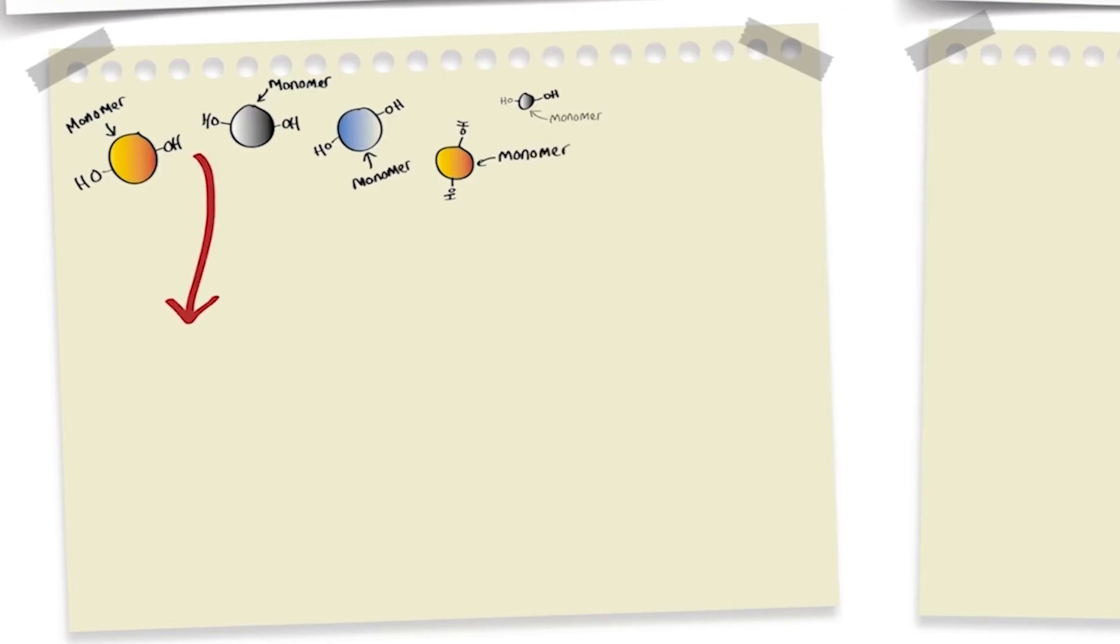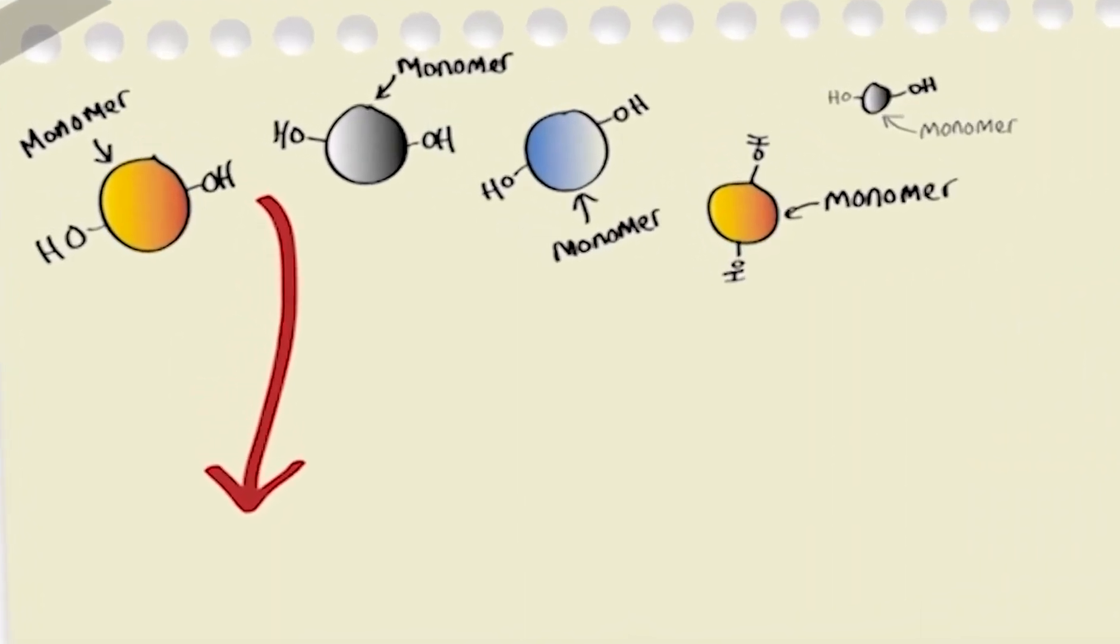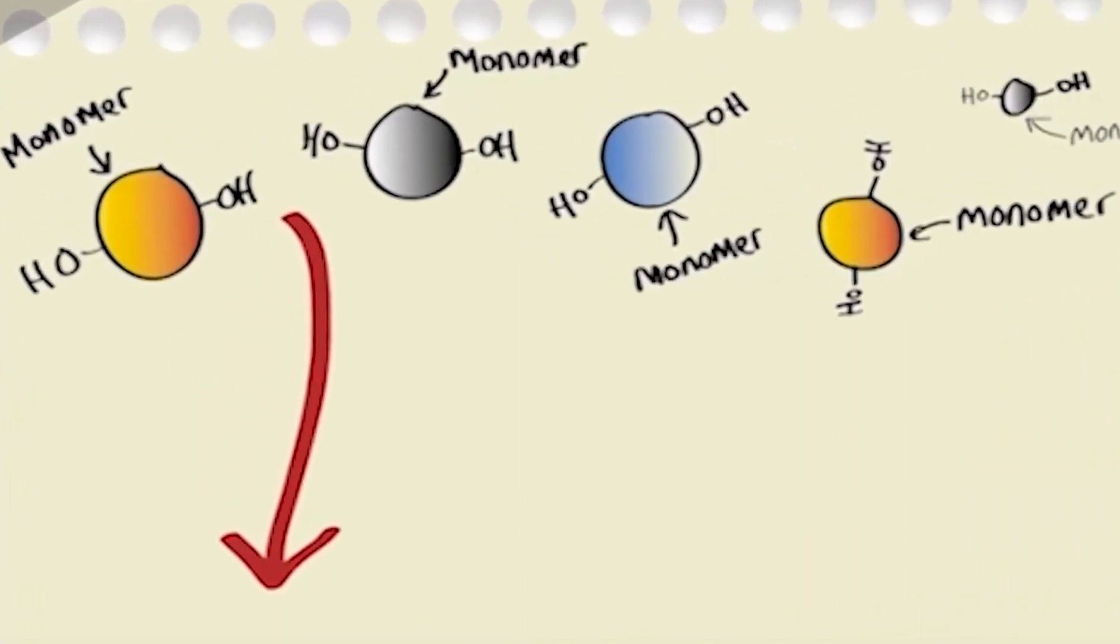Now, we're going to join together two of these monomers to begin with, and as we do so, we will remove a molecule of water. And as we can see on this first monomer here, we can take a hydrogen, and on the adjacent monomer, we can take a hydroxyl group, giving us H2O.